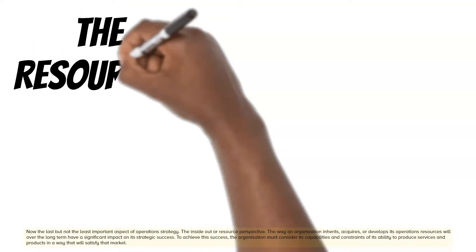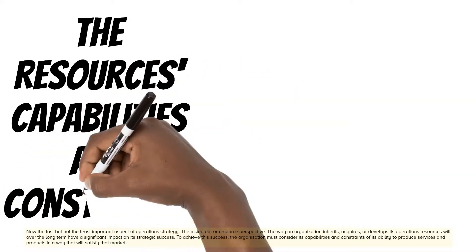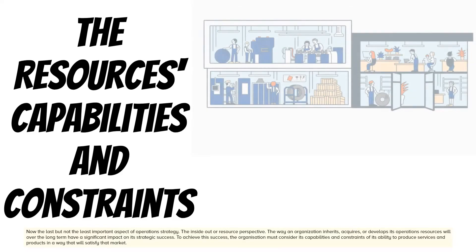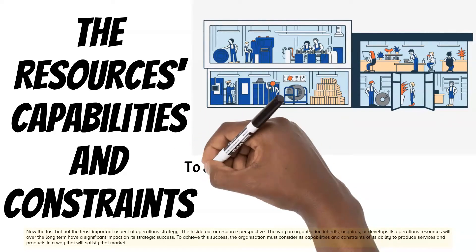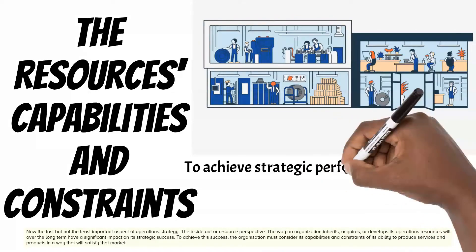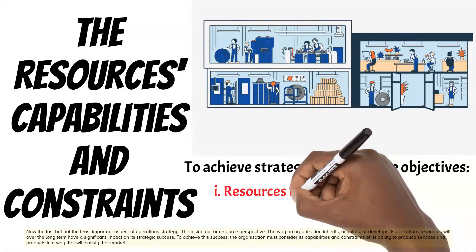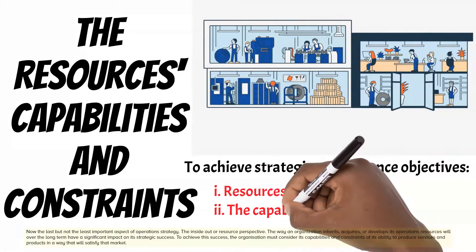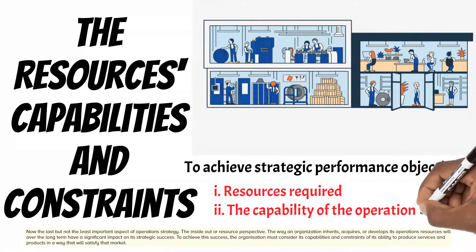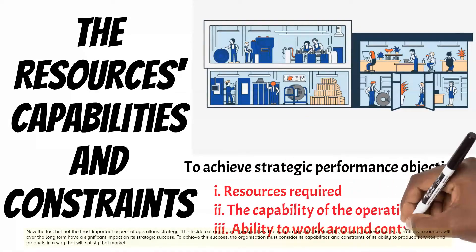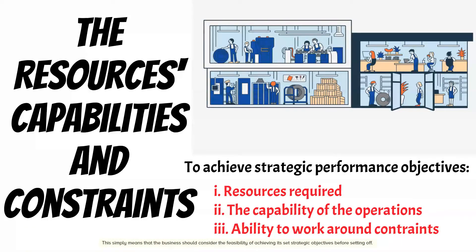Now the last but not the least important aspect of operation strategy: the inside-out or resource perspective. The way an organization inherits, acquires, or develops its operations resources will over the long term have a significant impact on its strategic success. To achieve this success, the organization must consider the capabilities and constraints of its ability to produce services and products in a way that will satisfy the market. This simply means the business should consider the feasibility of achieving its set strategic objectives before setting off.